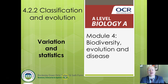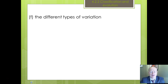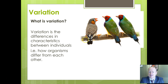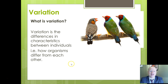Welcome to the first of our presentations about variation and statistics. In this first presentation we're mainly considering the different types of variation, because there are several different types you need to know about. Variation, putting it simply, is differences between individuals. We use the word trait to talk about a particular feature or characteristic — how organisms differ from each other.